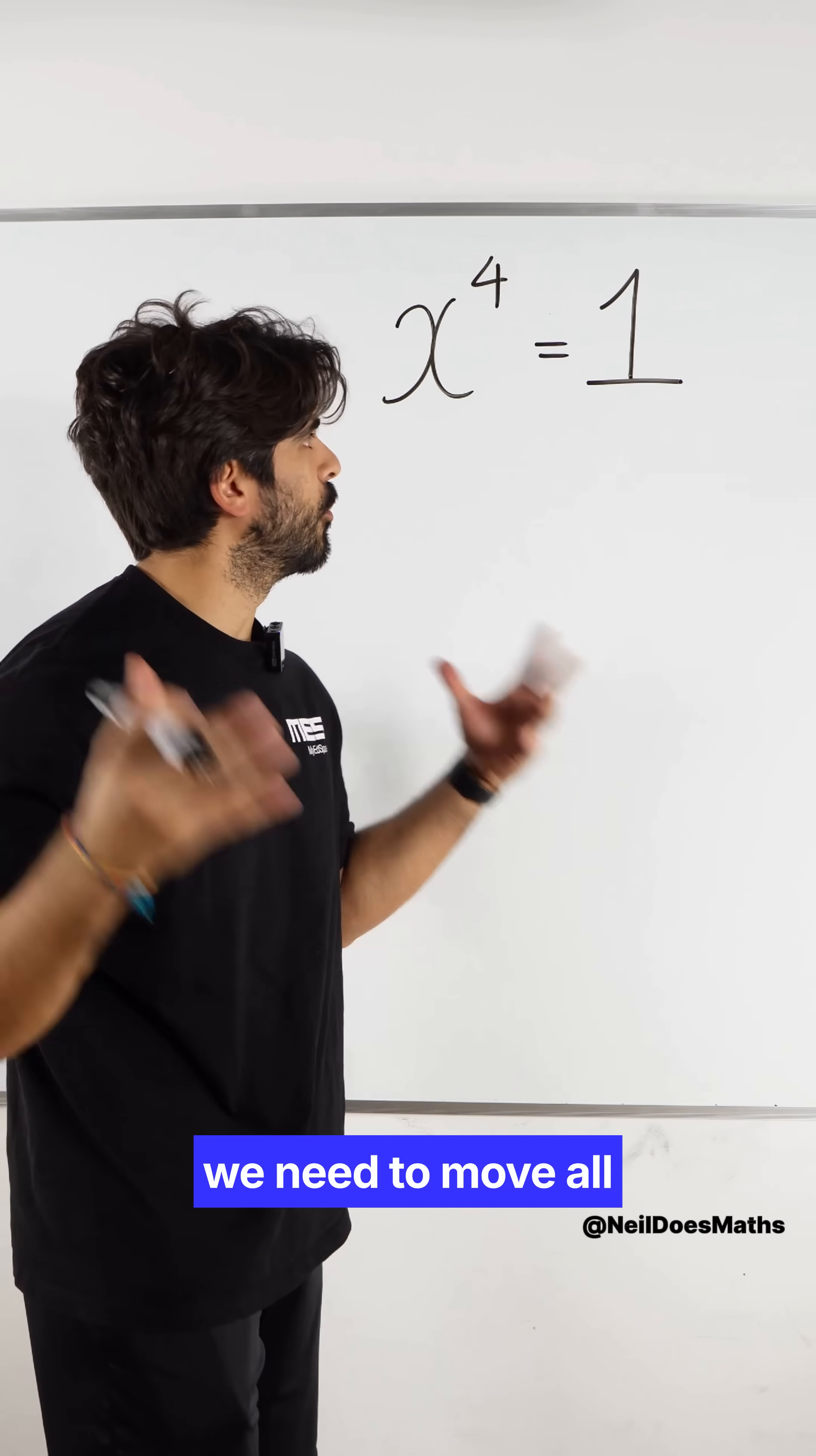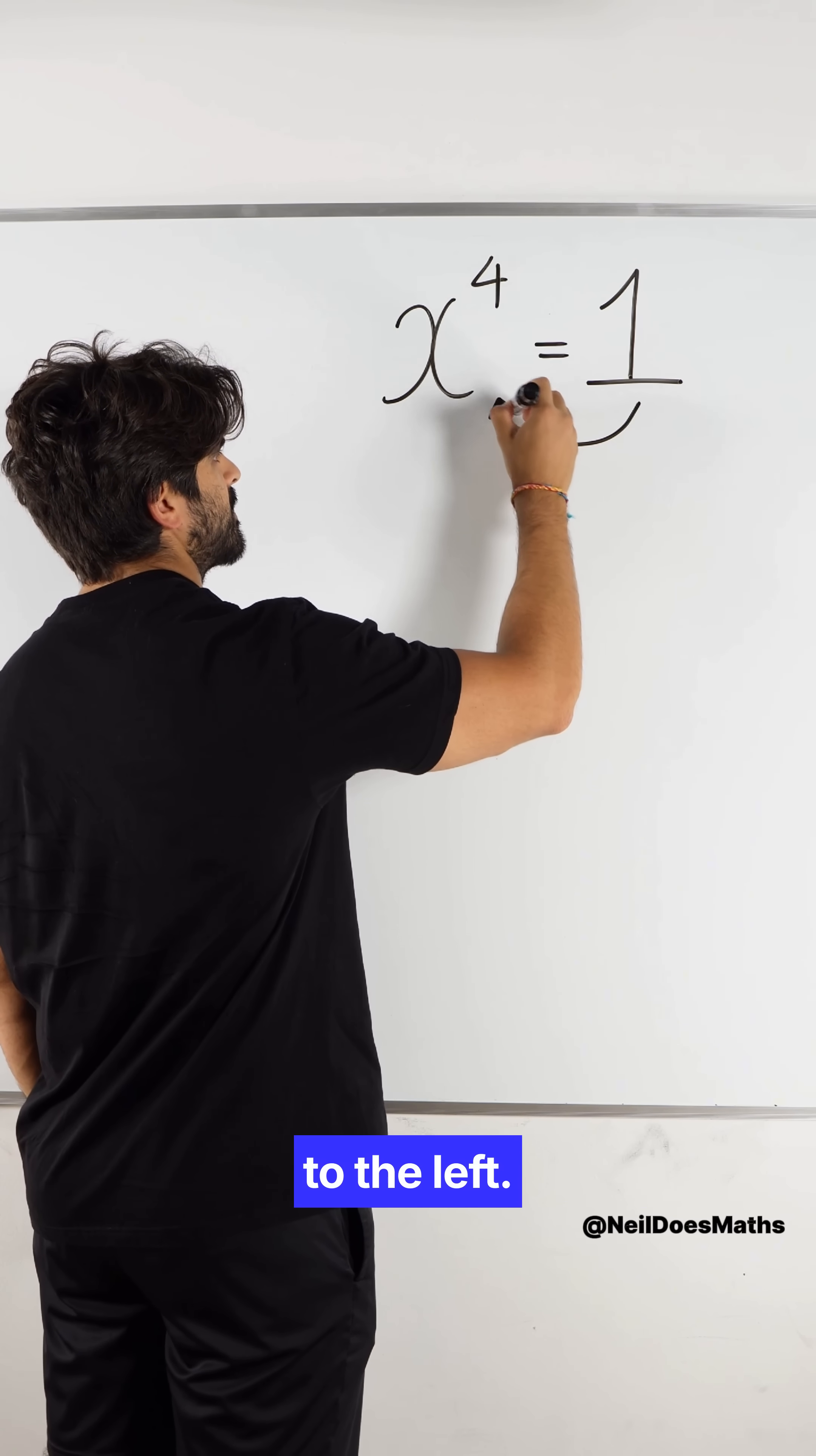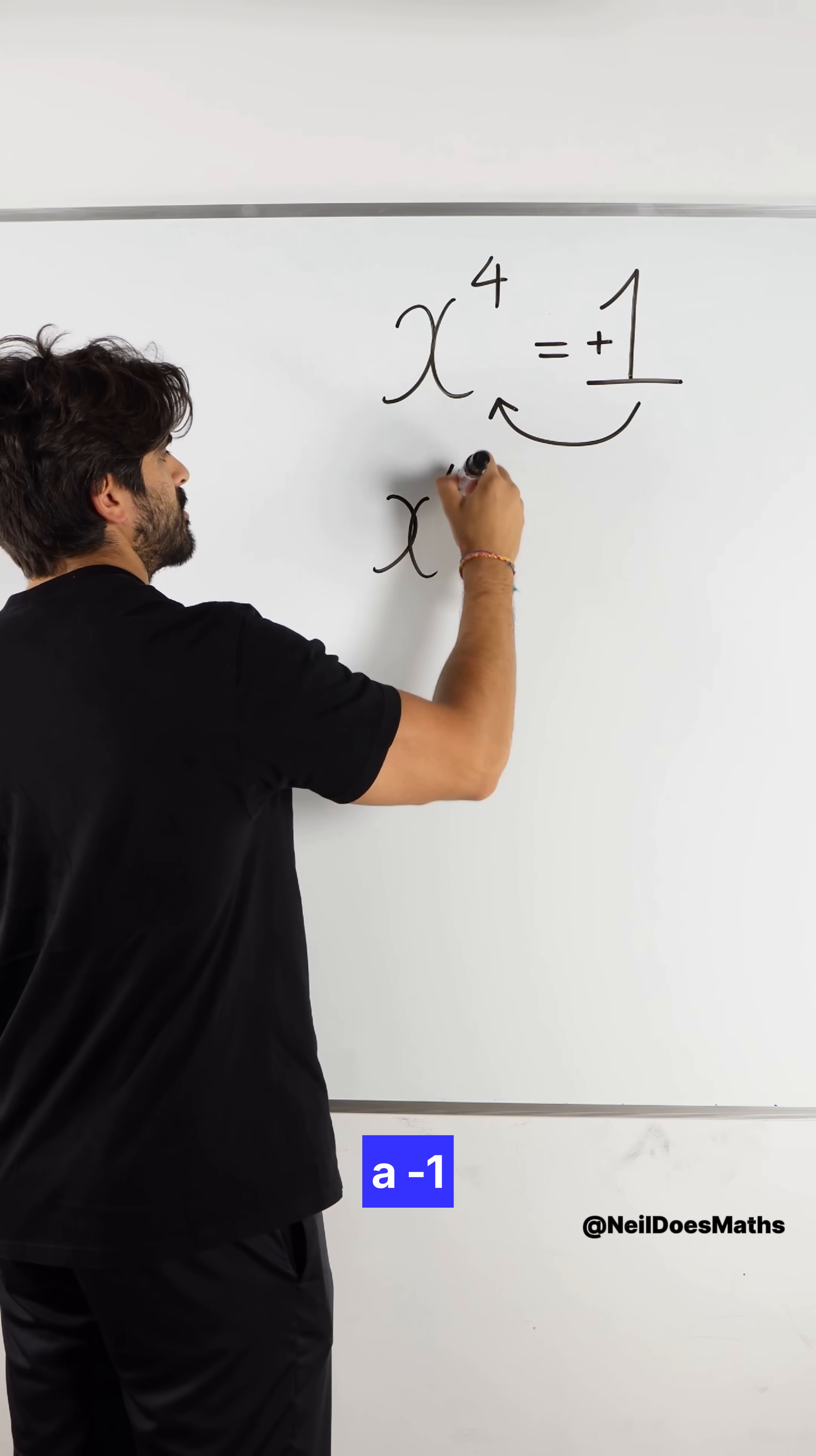To solve this properly, we need to move all the terms to one side. I'm going to do a Beyonce and move everything to the left to the left. The plus one on the left side becomes a minus one.